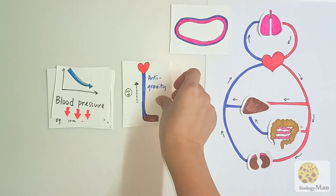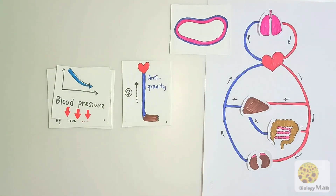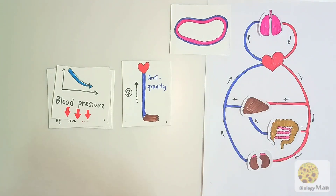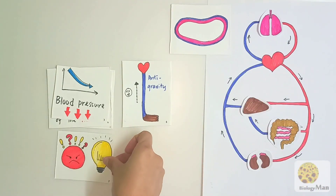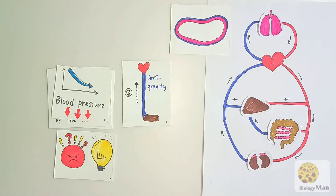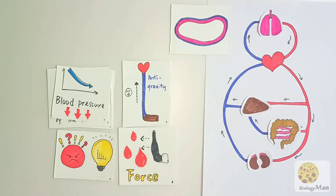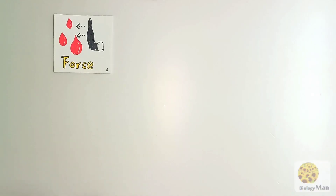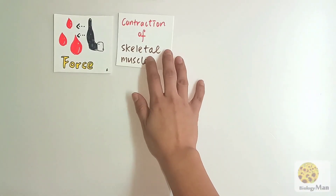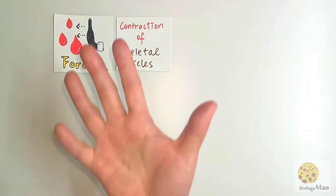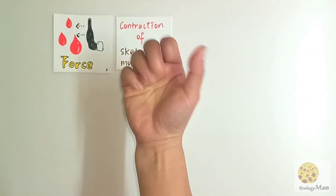Sometimes blood needs to be sent from the lower part of the body up to the heart, which is anti-gravity — moving against gravity is not easy. In such low blood pressure situations inside the vein, there must be another force to push the blood back to the heart. That force is the contractions of the skeletal muscle.